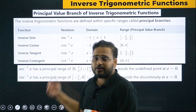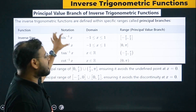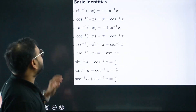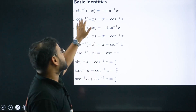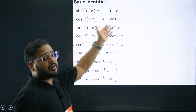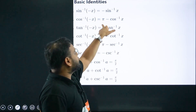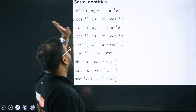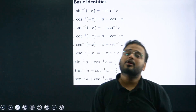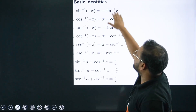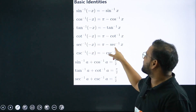You know the principal value: 0 to π/2 for sec inverse and cosec inverse. The first three — sin inverse, cos inverse, tan inverse — are most important. There are basic identities used in questions, including a PYQ based on combinations of these functions. For cos inverse, we have π minus cos⁻¹(x) when operating with a negative sign, whereas for sin inverse we simply have minus sin⁻¹(x). The same applies for tan and cot and sec.